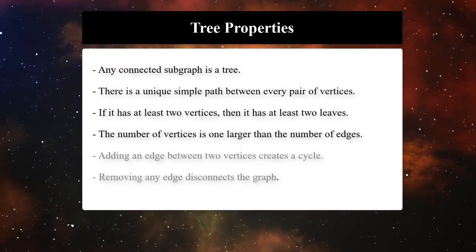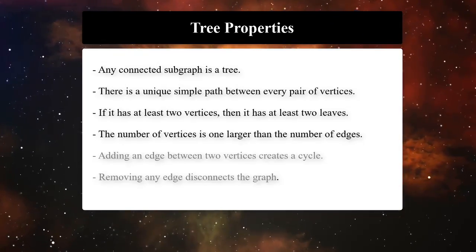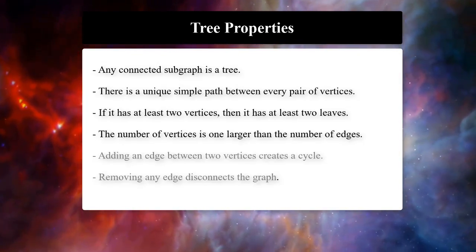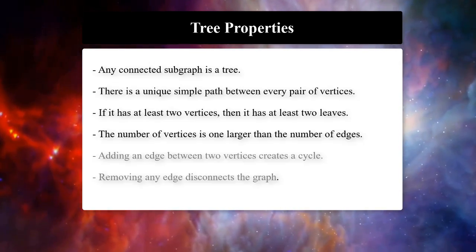We can list more properties of trees. The number of vertices is one larger than the number of edges, or a tree with at least two vertices has at least two vertices of degree one.